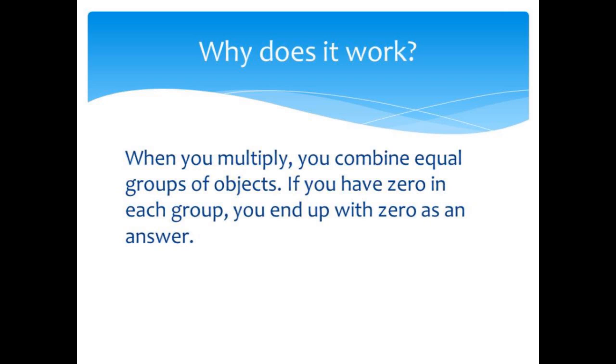Why does it work? Well, when you multiply, you combine equal groups of objects. If you have zero objects in each group, you still end up with zero as an answer.